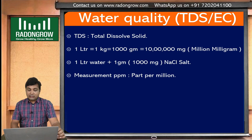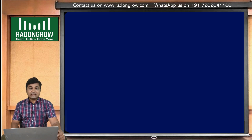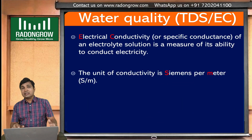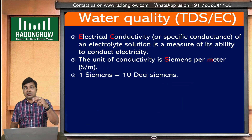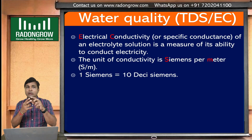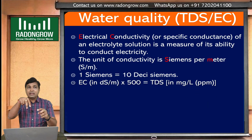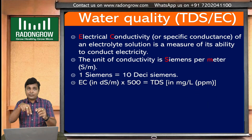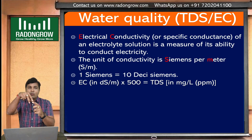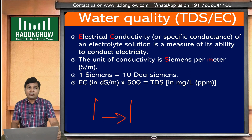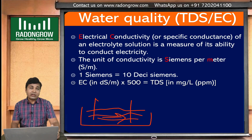Now another parameter is EC — electrical conductivity. EC means specific conductance. When we take two metal electrodes, insert them in water, and apply a particular current, current passes through the water from one electrode to another. That is the conductivity of water, and we call it electrical conductivity or EC.